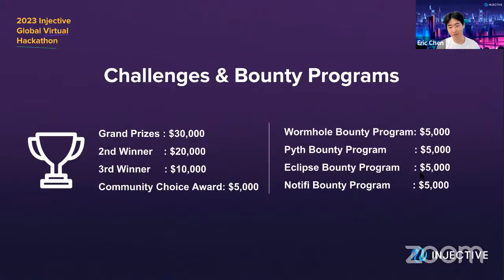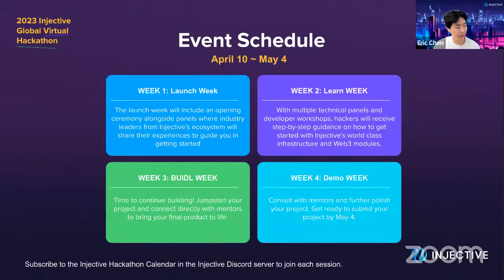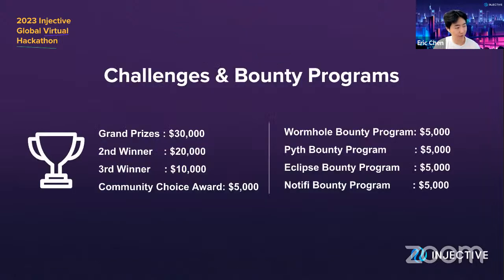Here are the prizes. The grand prize will be $30,000, with second place being $20,000 and third place $10,000. There's also a community choice reward of $5,000. There's also the Wormhole Bounty Program at $5,000, and the PIF, Eclipse, and Notify Bounty Programs each coming in at $5,000.